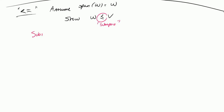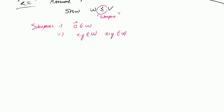Remember how to show subspace: for subspace proofs, you need to show that first of all zero belongs to W, that given X and Y belonging to W, X plus Y belongs to W, and given that X belongs to W and C belongs to the real numbers, then CX belongs to W. That's the subspace proof in action.